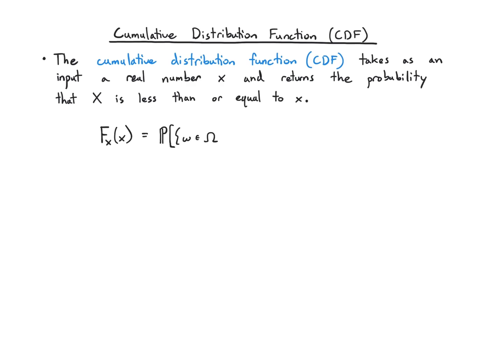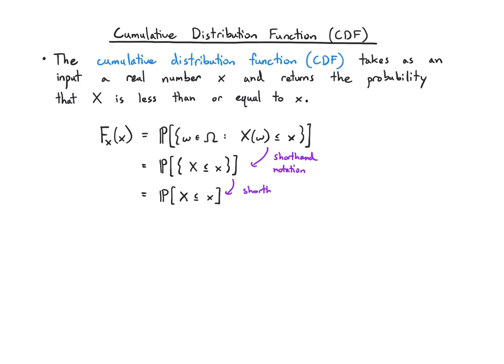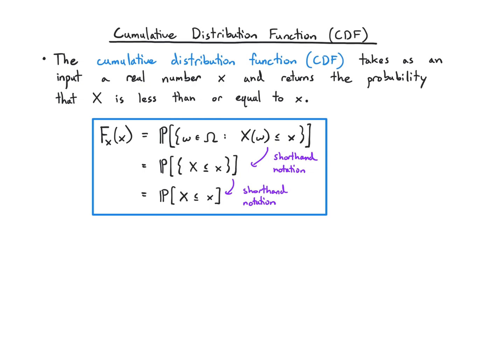We write it with this capital F notation, and what we're talking about is the probability that I see an outcome from the sample space that gets mapped into a value less than or equal to x. In simpler shorthand, it's the probability that random variable X is less than or equal to little x, and this bottom form is often the easiest to think about.